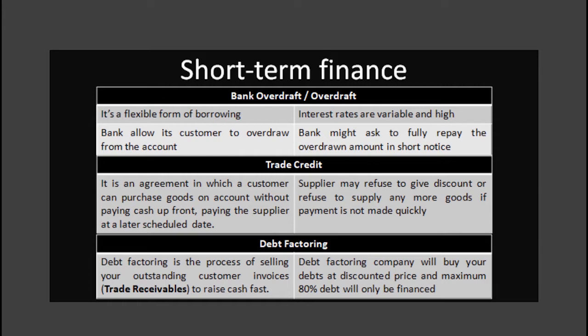Next we will move on to trade credit. Businesses usually buy most of their resources such as raw materials and components from their suppliers on credit. Trade credit is a source of finance as the supplier is lending money for the cost of goods for the length of the agreed credit period. If the business can negotiate long credit terms with suppliers, it will increase short term finance. For example, if a business can buy $500,000 of raw material on credit terms of 40 days instead of 30 days, then the business has $500,000 available for an extra 10 days.